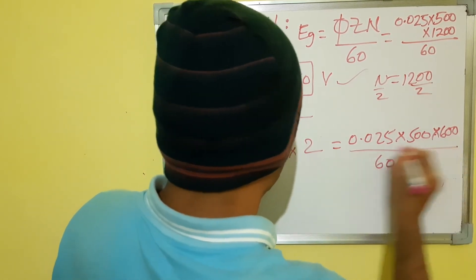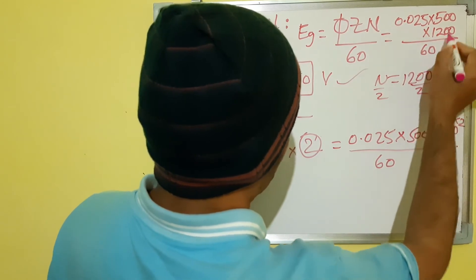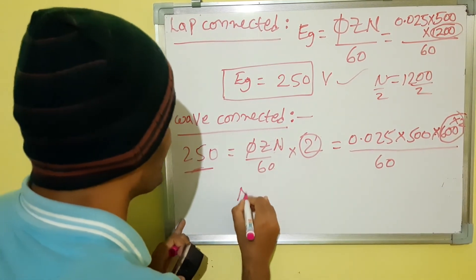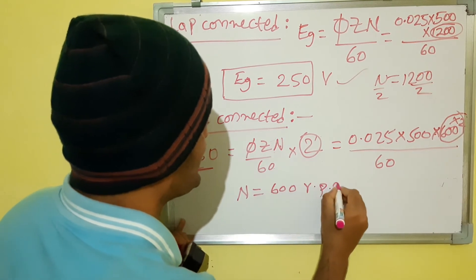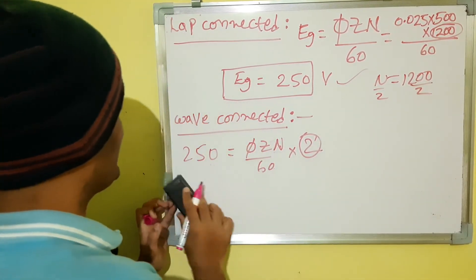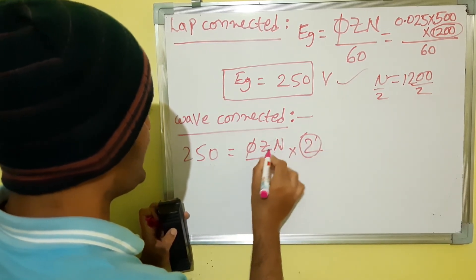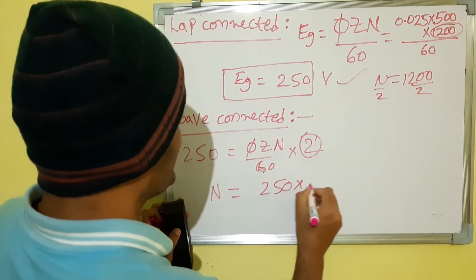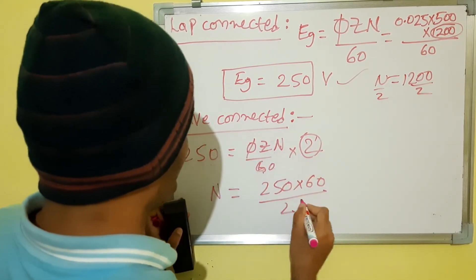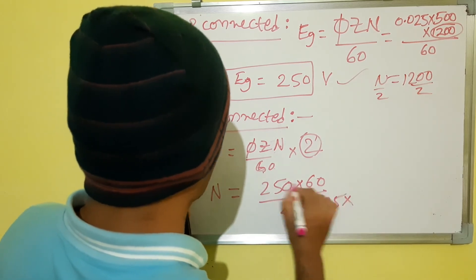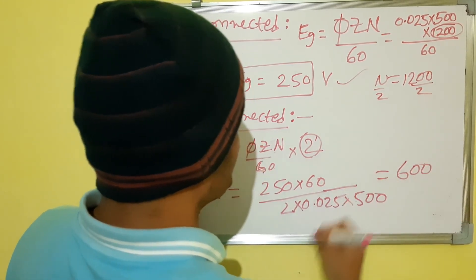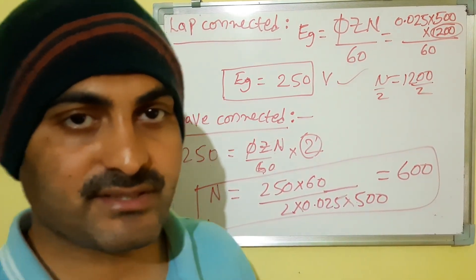So the factor becomes 2, and into 60, dividing by the factor 2, 1200 divided by 2 gives 600 RPM. For the wave connected machine, N equals 250 into 60 divided by 2 into 0.025 into 500, which gives N equals 600 RPM. Thank you engineers, thank you so much.